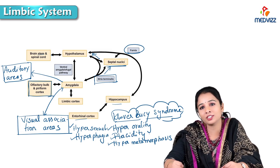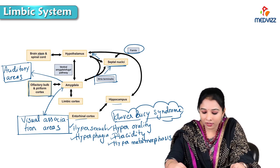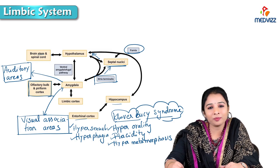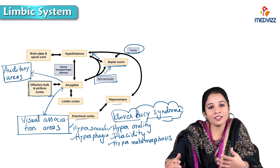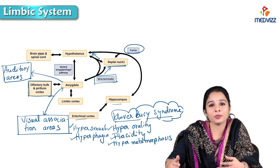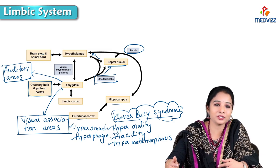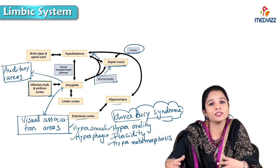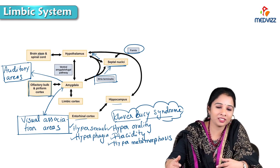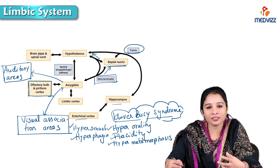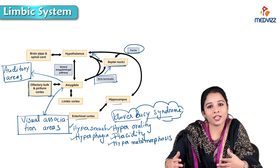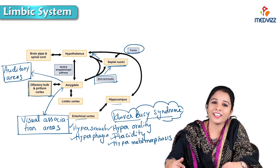This completes the applied aspect and clinical correlations of the limbic system. Today we learned about the anatomical components, physiological subdivisions, and connections of the limbic system. All these help you understand what the limbic system is. Try to read today to understand it better. Thank you.